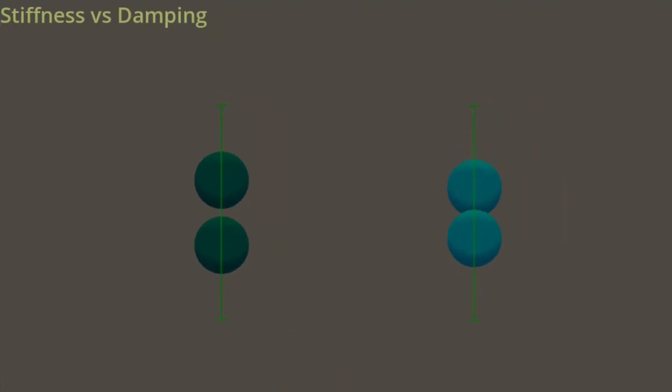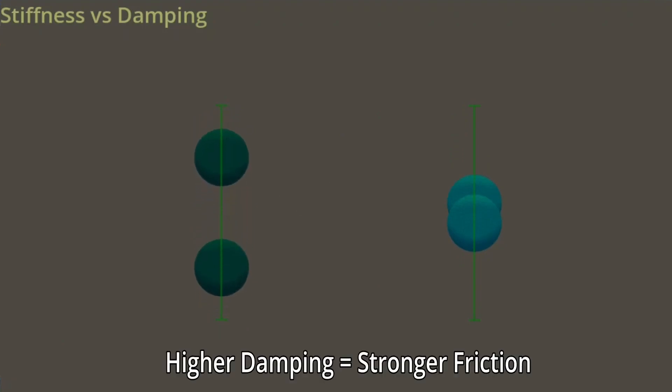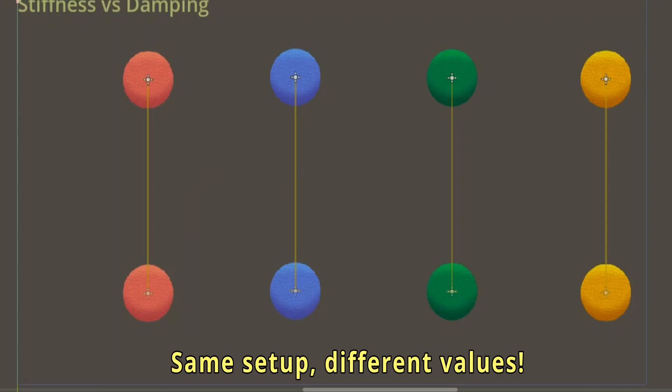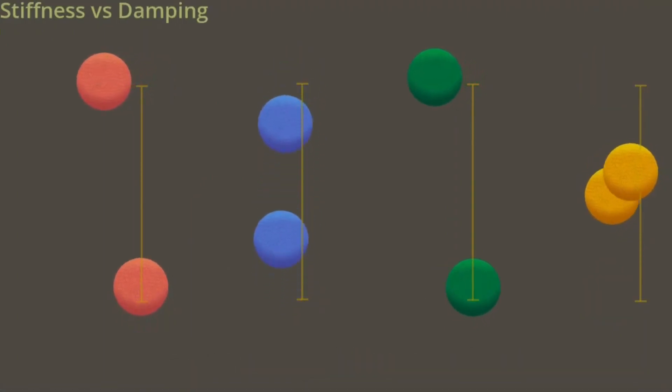Damping however controls how strong the spring resists to strong changes in the length of the spring. So it's intuitive to think about it like friction for example. And you can play with these values to get all sorts of different effects.